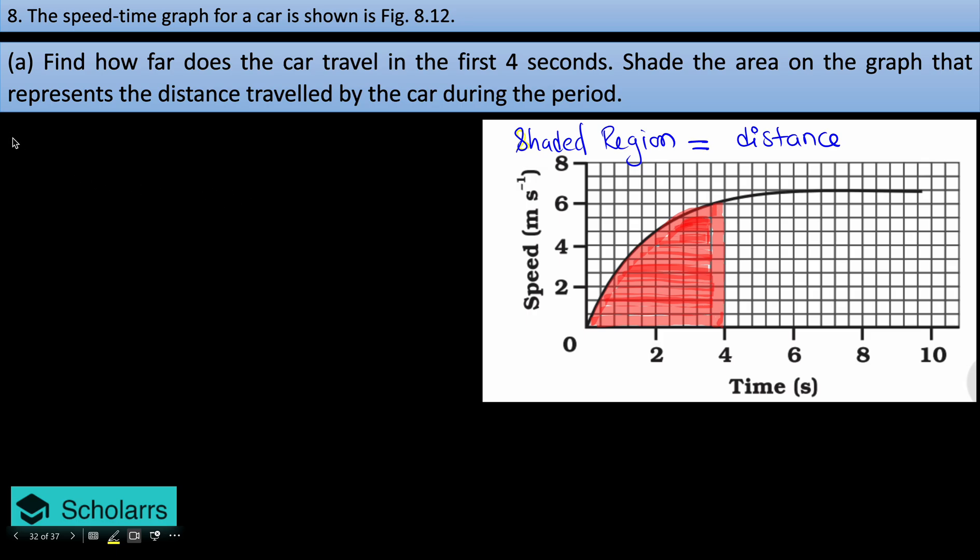What basically happens is that this shaded region is equal to whatever the distance is covered. So basically, if I find the area under the curve, then I will get to know. Let's start. You can say that in the given graph, there are basically 56 full squares and plus 12 half squares. This is from 0 second to 4 seconds. These are 56 full squares and 12 half squares. So total number of squares, if I check, is equal to 56 full plus, if I say this is equal to 56 plus 6, total will be 62 squares.